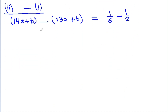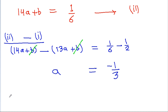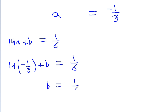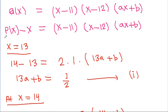Subtracting equation 1 from equation 2: (14a + b) - (13a + b) = 1/6 - 1/2. The b terms cancel and we get a = 1/6 - 3/6 = -2/6 = -1/3. Substituting back into equation 2: 14(-1/3) + b = 1/6, so b = 1/6 + 14/3 = 1/6 + 28/6 = 29/6. So a = -1/3 and b = 29/6, and p(x) - x = (x-11)(x-12)(ax+b).